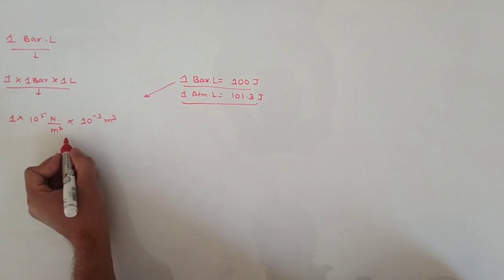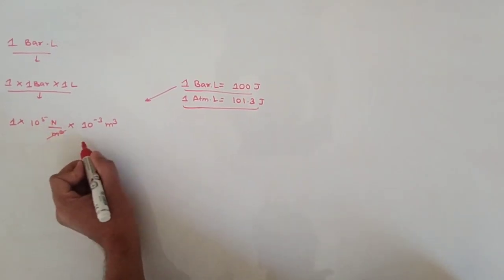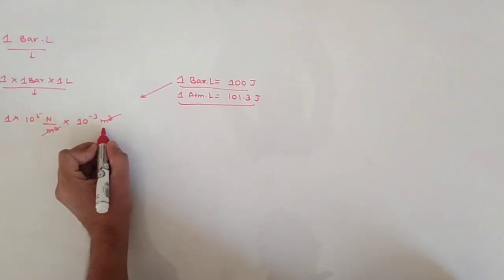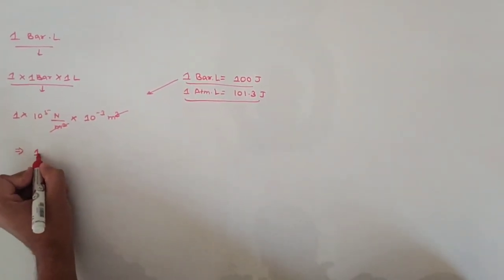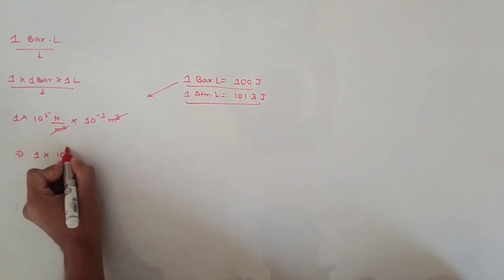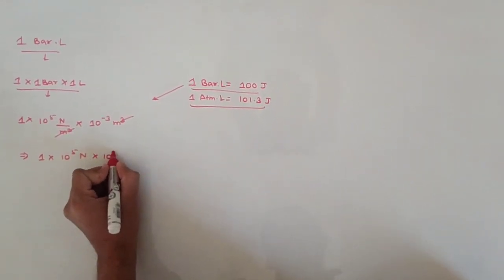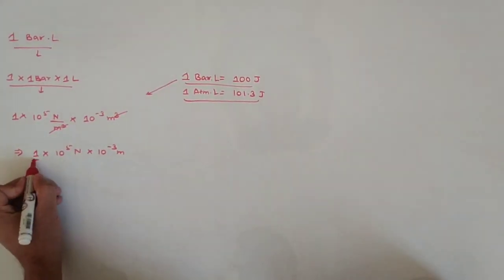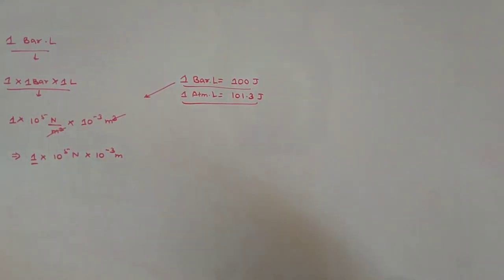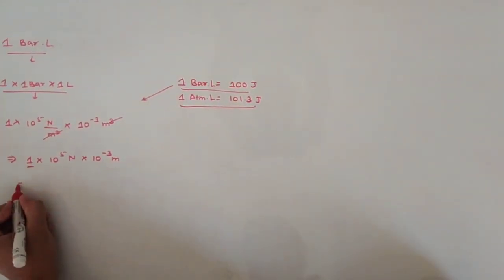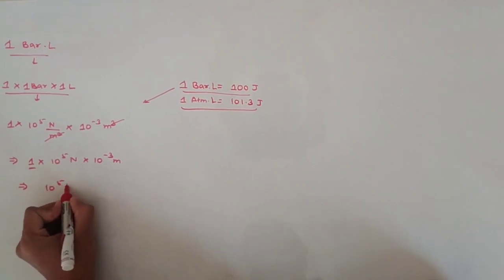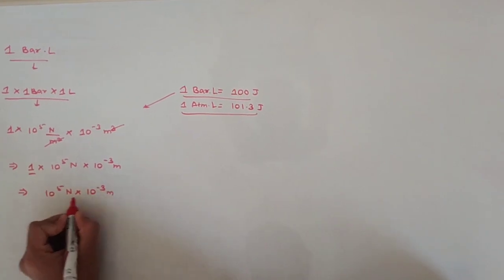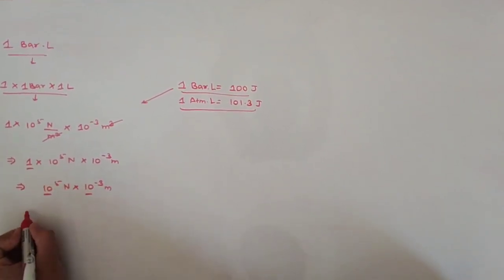From here, we can see that meter squared cancels with meter squared from the cubic term, and we are only left with a single meter. We now have 10⁵ Newton multiplied by 10⁻³ meter. Since the bases are the same, the powers can be added.